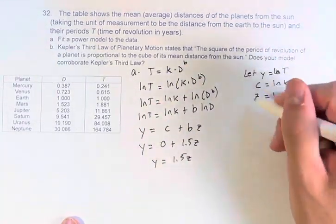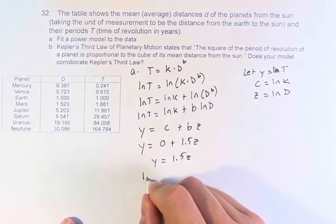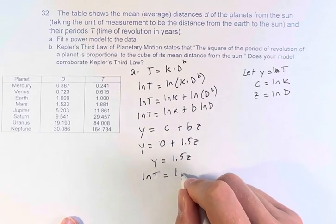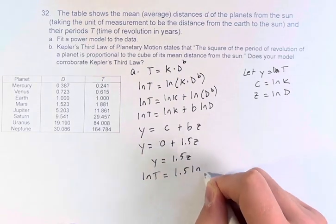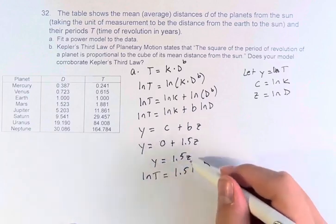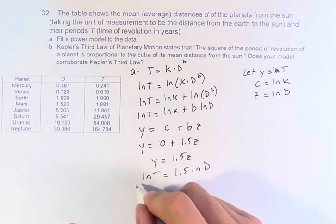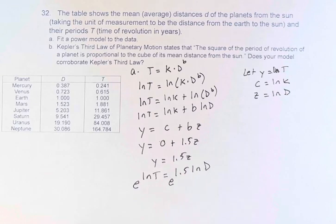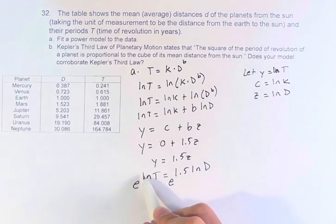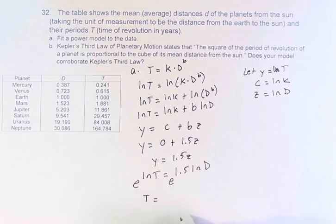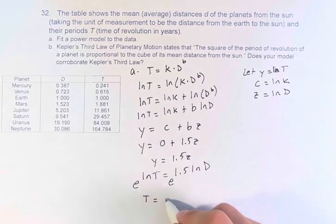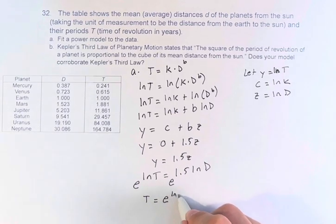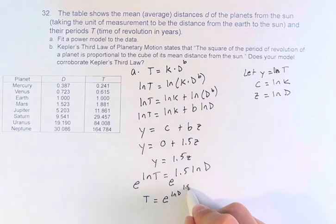And now, we can plug back in our variables that we took out. ln of t is equal to 1.5 ln of d, plug in for y and z. And now, if we take e and raise it to both of these sides, we have e to the ln, e to the natural log is e to the log base e of t. So this is just t is equal to e to the ln of d to the 1.5.